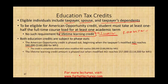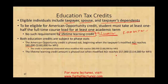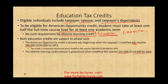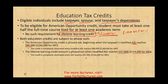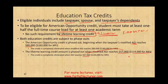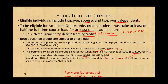The Lifetime Learning Credit phases out when modified adjusted gross income starts at $57,000 for single filers and $114,000 for married filing jointly. It is completely eliminated at $67,000 for single — a $10,000 range — and a $20,000 range for married filing jointly.